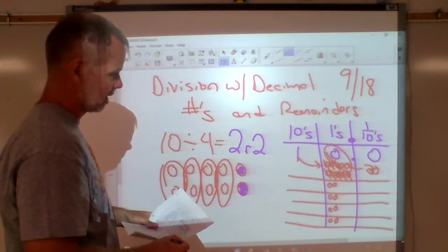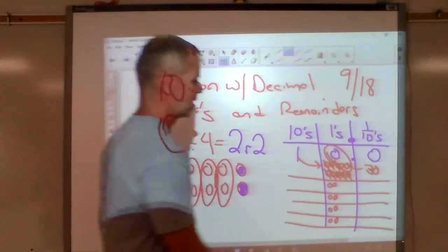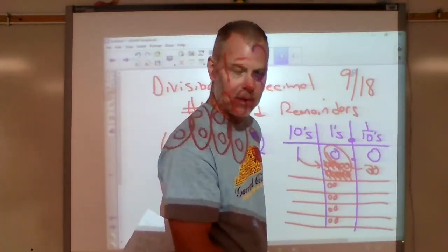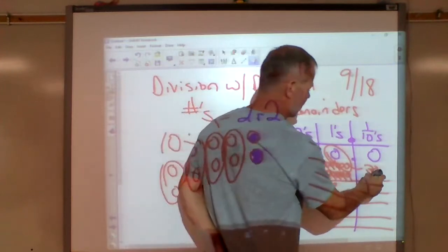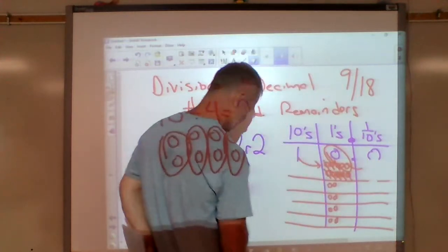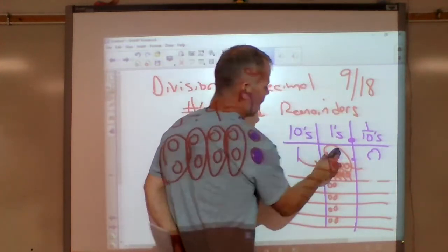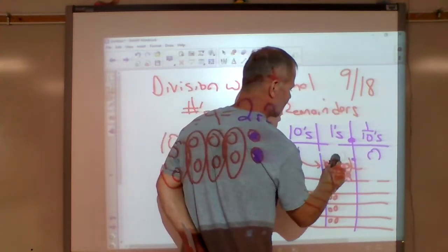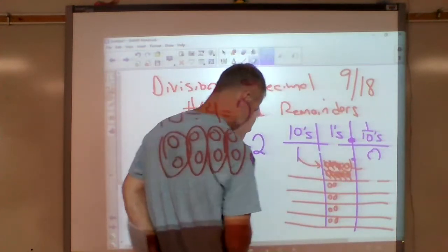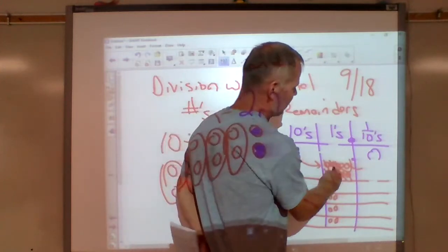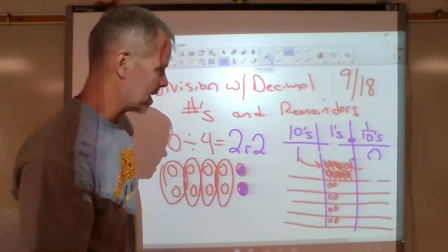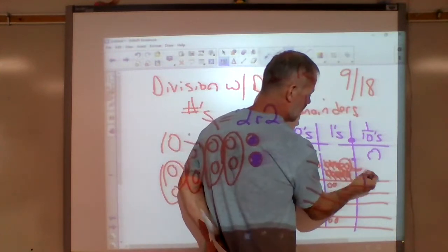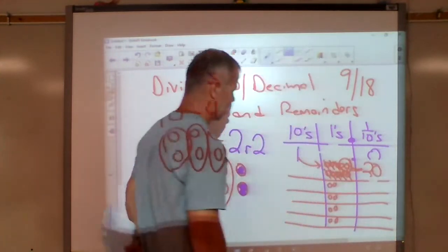So I actually had ten here and there was nothing there to begin with. I moved that one over — that one ten dollar bill made ten ones. I shared those, which means I had two left over. That means I now have twenty over in the tenths place.